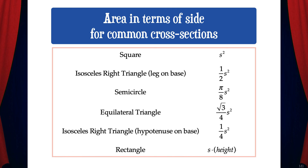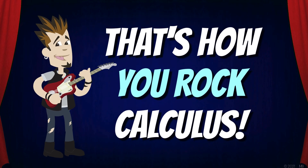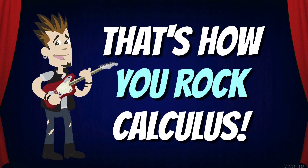With all of these problems, we've needed to find formulas that give us area in terms of side for this specific cross-section. Here's a chart that you can reference, which has area formulas for several common shapes. Note that many of them contain s squared and are just multiplied by constants. I hope you're now starting to feel more comfortable with these types of problems. Just keep on practicing. And that's how you rock calculus — make it yours!